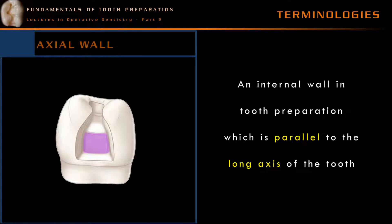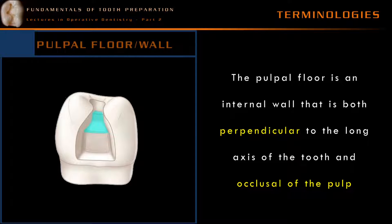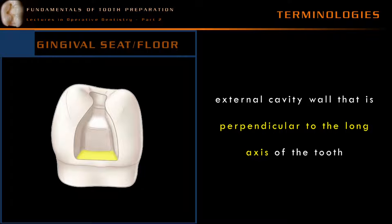The axial wall is an internal wall in tooth preparation which is parallel to the long axis of the tooth. An external wall which is parallel to the long axis of the teeth is represented by the respective surface name. The pulpal floor, also represented as pulpal wall, is an internal wall that is both perpendicular to the long axis of the tooth and occlusal of the pulp. A gingival seat or gingival floor is an external wall that is perpendicular to the long axis of the tooth. Remember: the pulpal floor is an internal wall, but the gingival seat or gingival floor is an external wall.